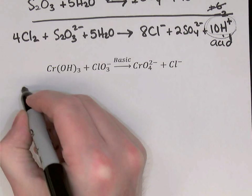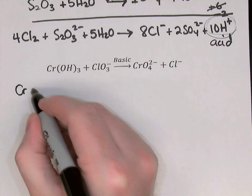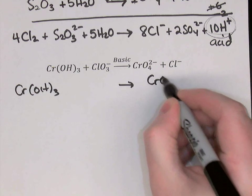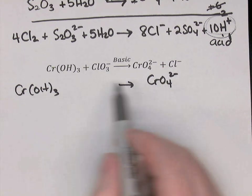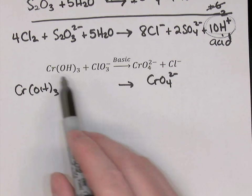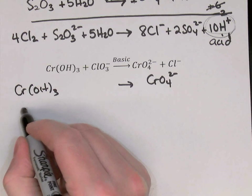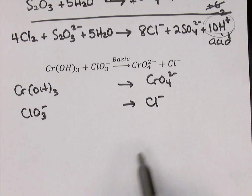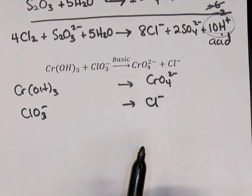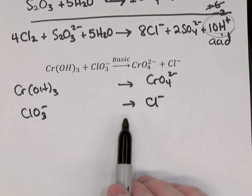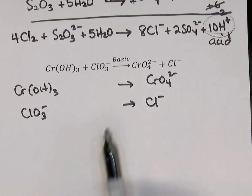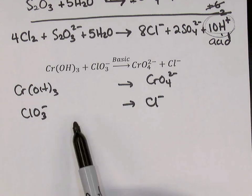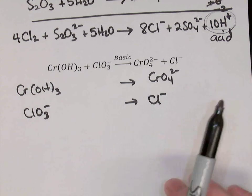Split the reaction: Cr(OH)₃ becomes CrO₄²⁻ — both have chromium, so they go together. And ClO₃⁻ becomes Cl⁻ — both have chlorine. Now balance everything except hydrogens and oxygens: chromiums are balanced, chlorines are balanced, so we're good.